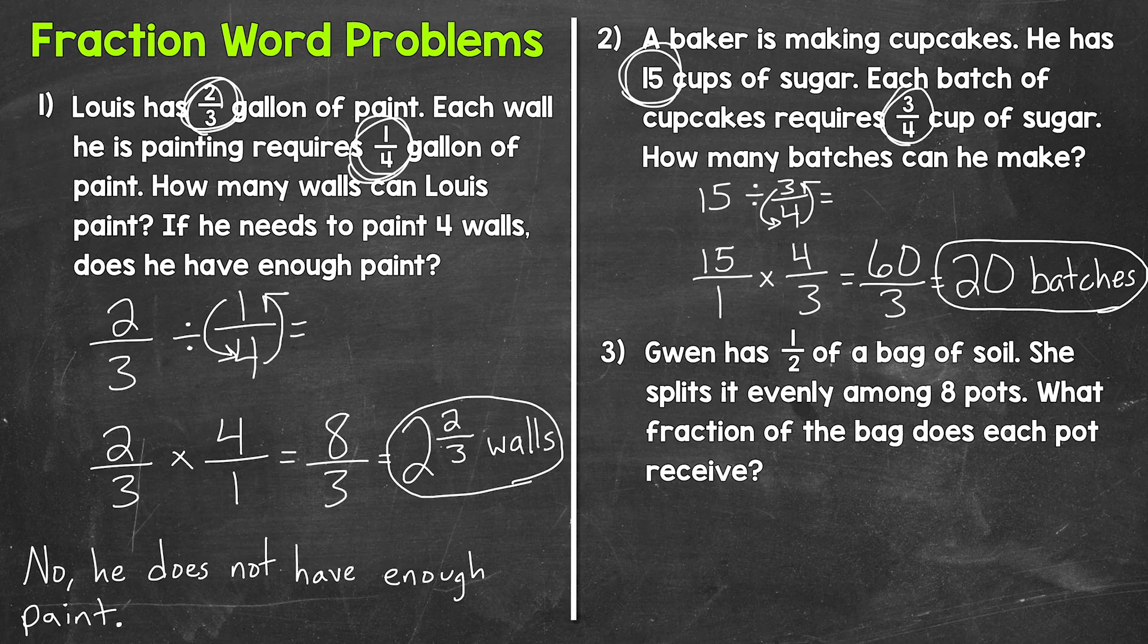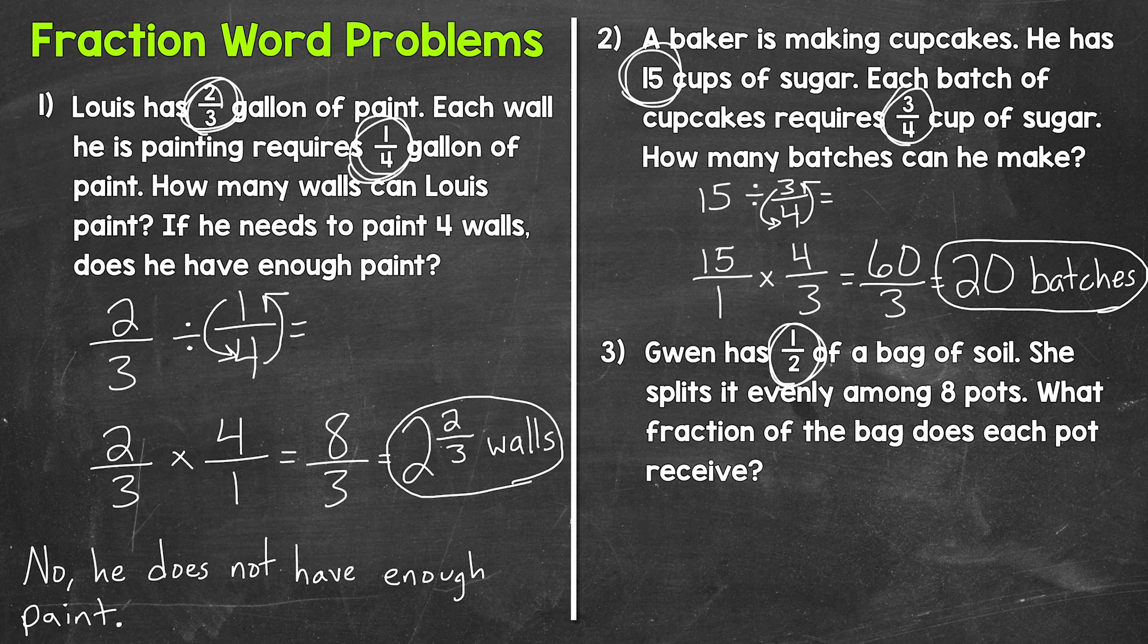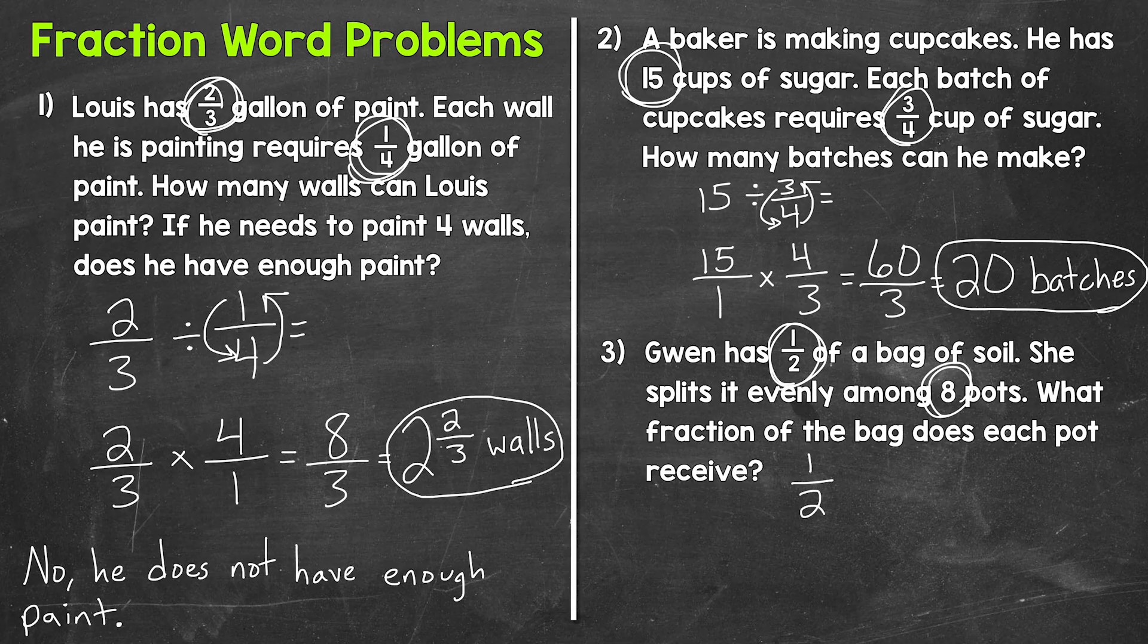Lastly, let's move on to number 3, where we have Gwen has one half of a bag of soil. She wants to split it evenly among 8 pots. What fraction of the bag will each pot receive? So in order to solve this, we know that Gwen has one half of a bag of soil and she's splitting it or dividing it among 8 pots. So Gwen is starting with half a bag and dividing it between 8 pots.